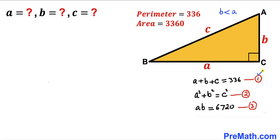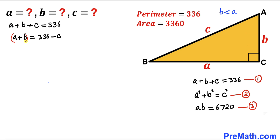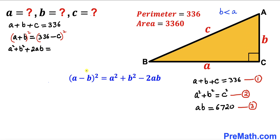Focusing on equation one, let's move c to the right-hand side, giving us a plus b equals 336 minus c. Taking the square of both sides and recalling the identity (a plus b) squared equals a squared plus b squared plus 2ab on the left, and applying the identity (336 minus c) squared equals 336 squared plus c squared minus 2 times 336 times c on the right.